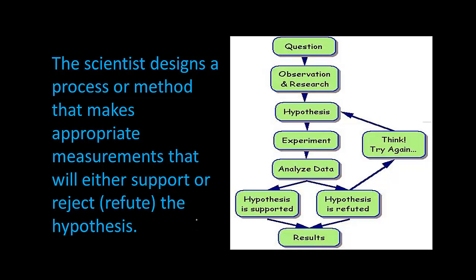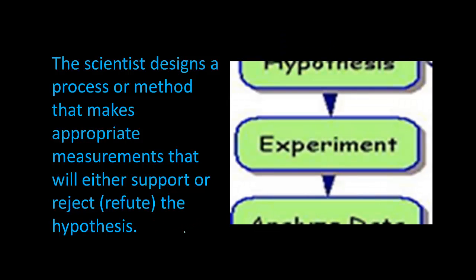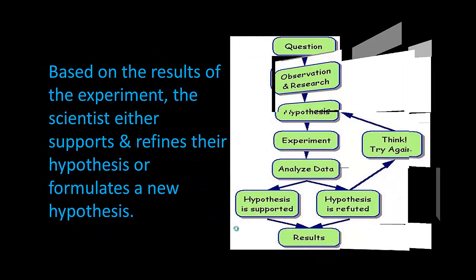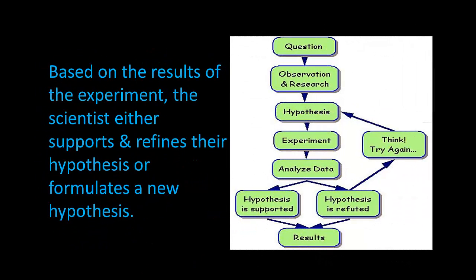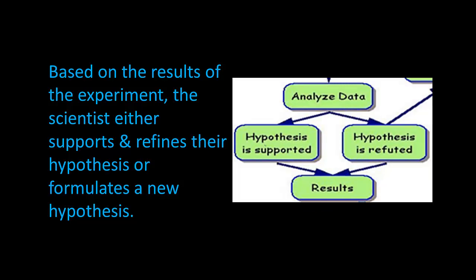The fourth step: the scientist designs a process or method that makes appropriate measurements. This is the experiment that will either support or refute the hypothesis. Based on the results of the experiment, the scientist either supports or refines their hypothesis by analyzing the data to see if the hypothesis is supported or refuted, and then takes steps from there.